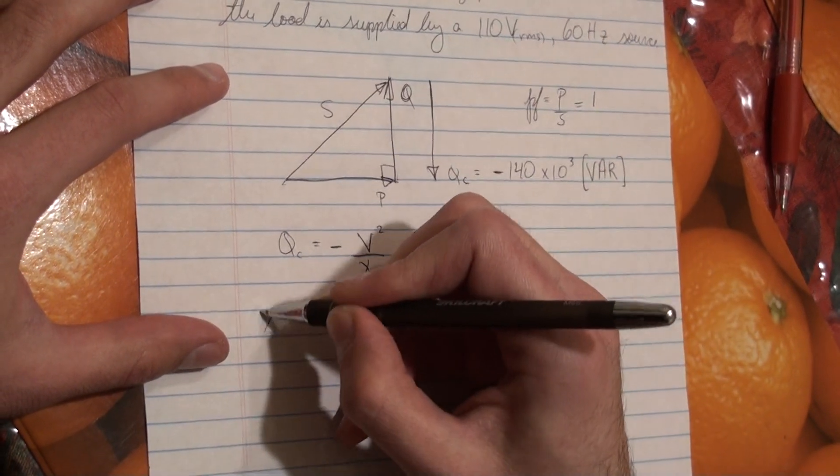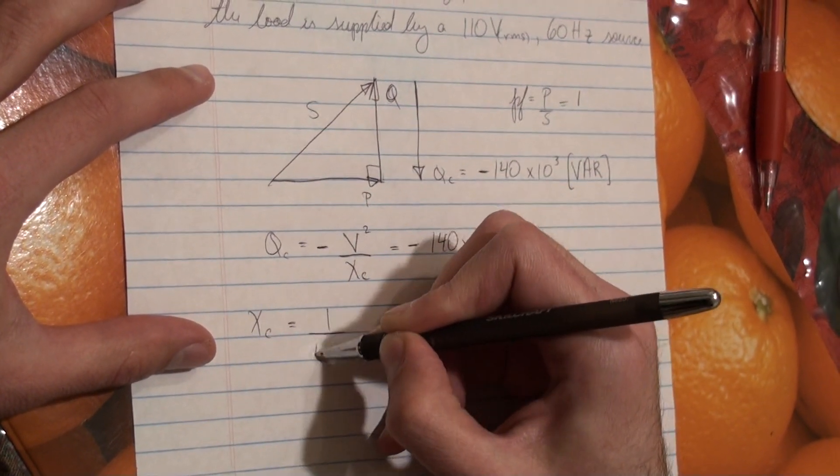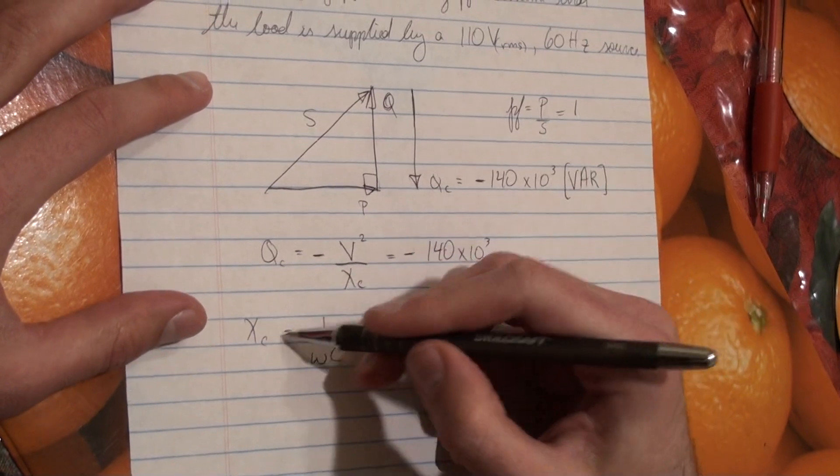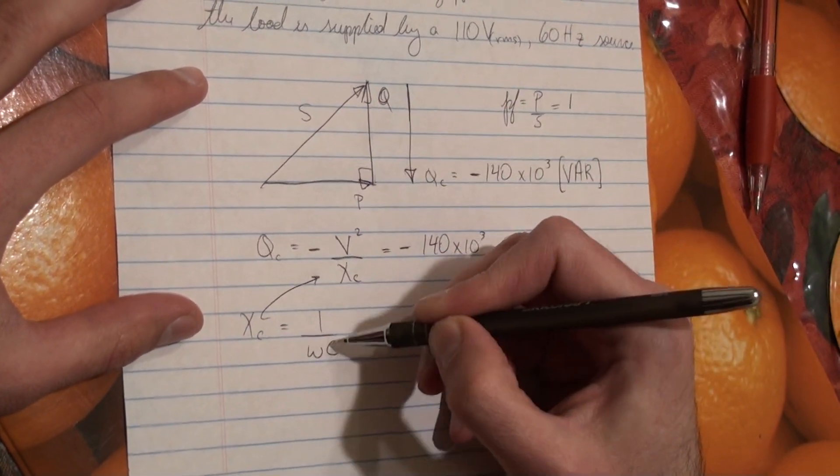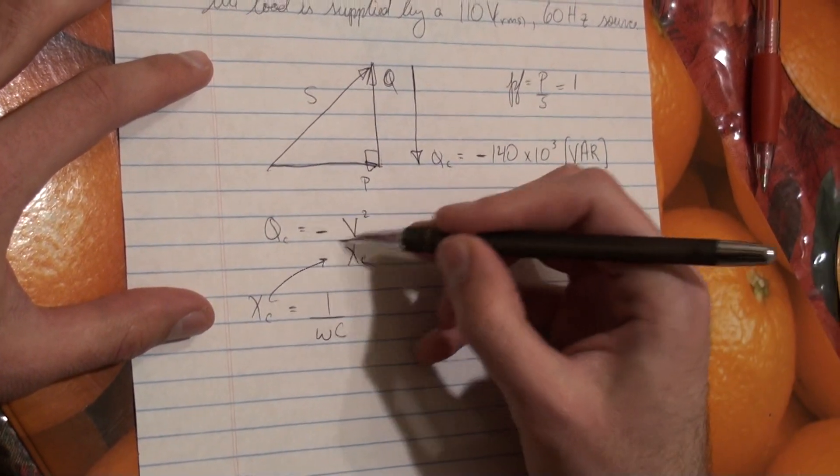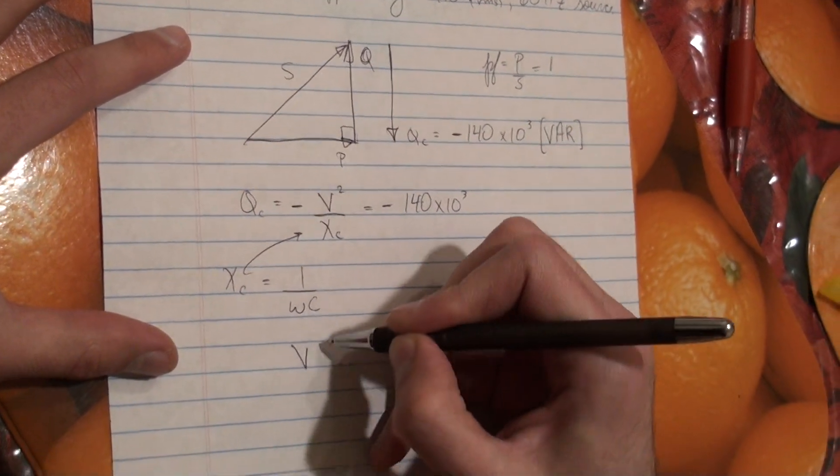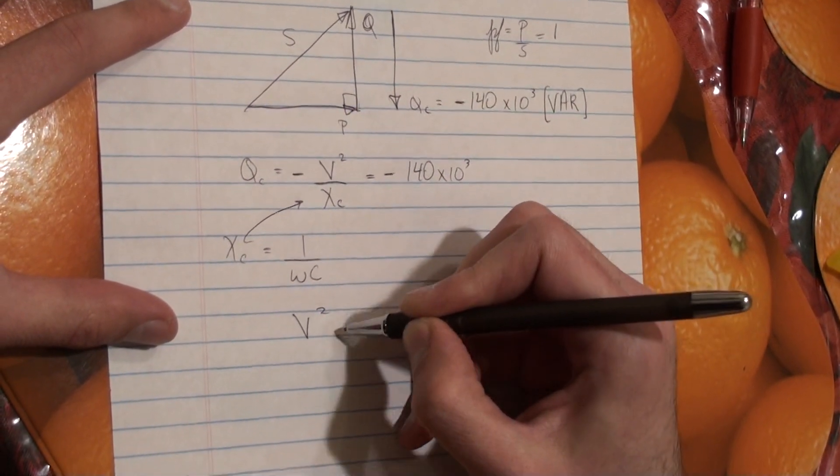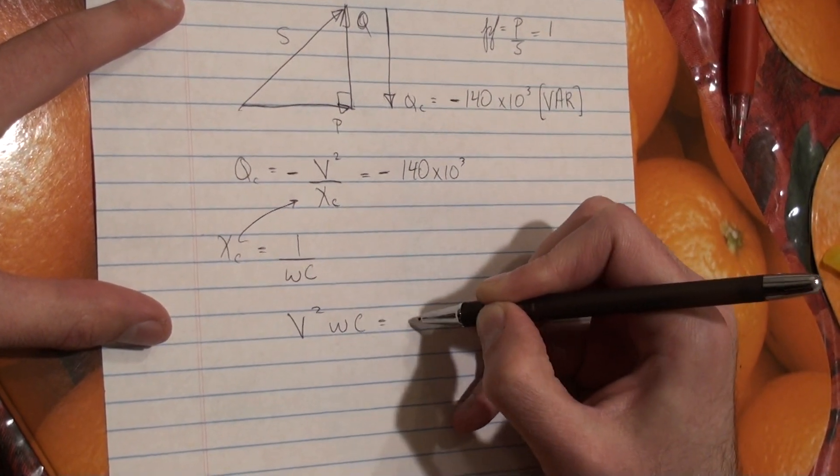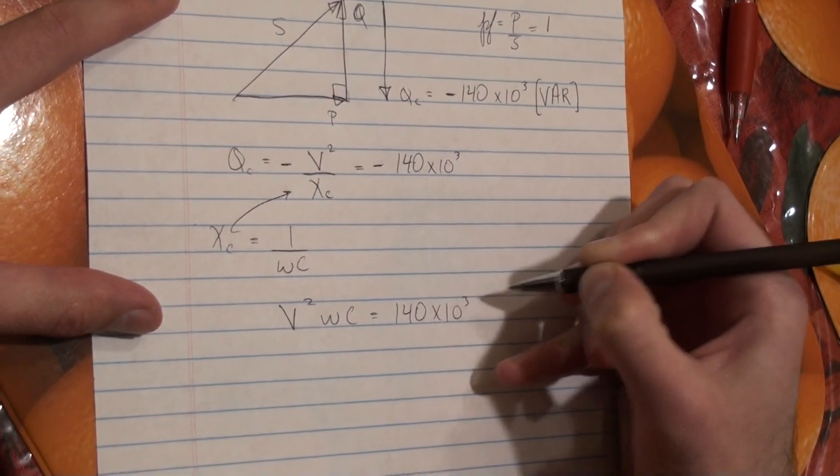The reactance, just to review, of a capacitor is 1 over omega times the value of the capacitance. So plugging this in here, the omega C is going to come on top, the minuses will cancel on both sides. So we get V squared omega C must equal 140 times 10 to the 3.